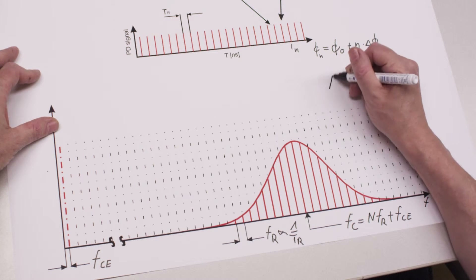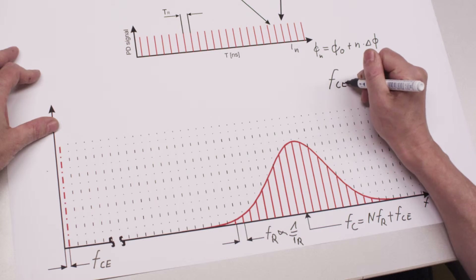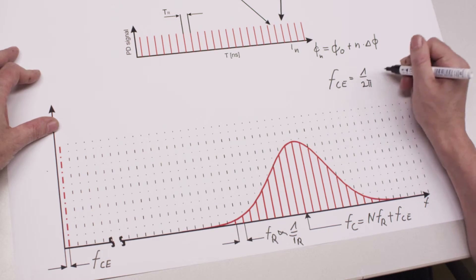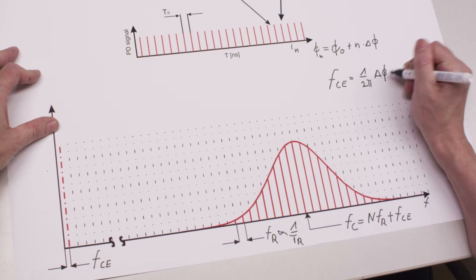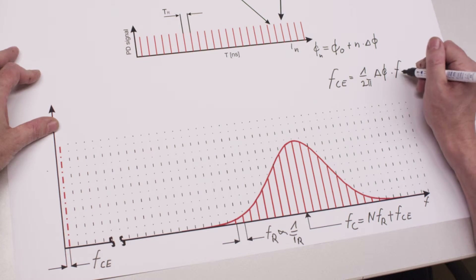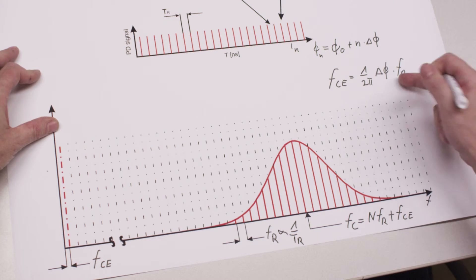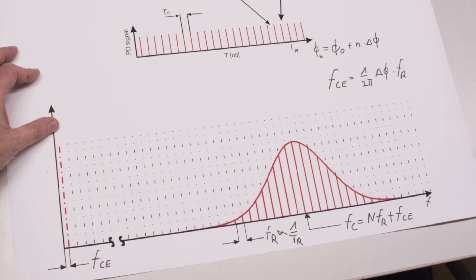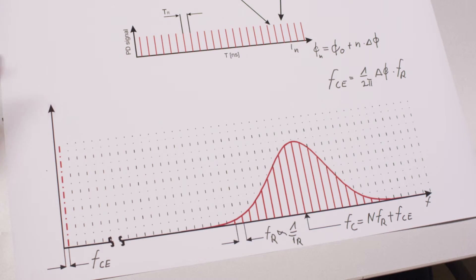The carrier envelope offset frequency is given by one over 2π times the phase slip times the repetition rate. Since the repetition rate is in the radio frequency range, the carrier envelope offset frequency is also in the radio frequency range. The next question is whether the phase slip is constant over time — actually, it is not, and therefore we need a carrier envelope phase stabilization scheme.